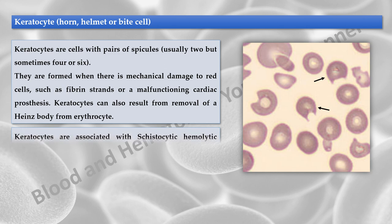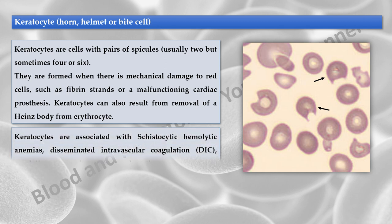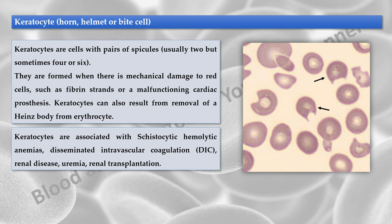Keratocytes are associated with schistocytic hemolytic anemias, disseminated intravascular coagulation, renal disease, uremia, and renal transplantation.